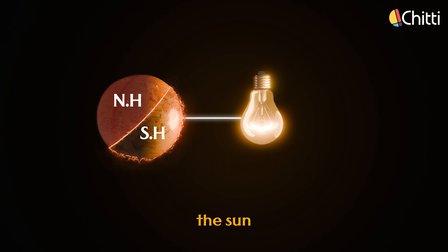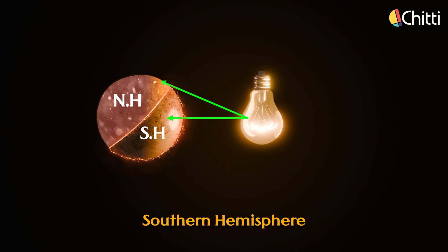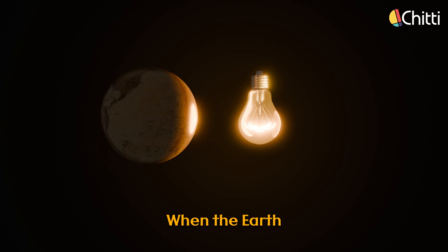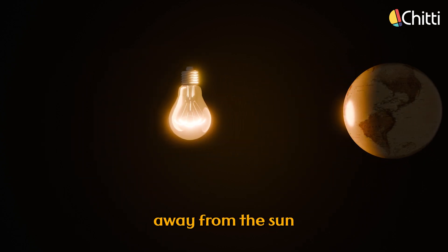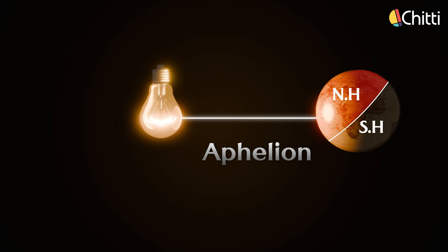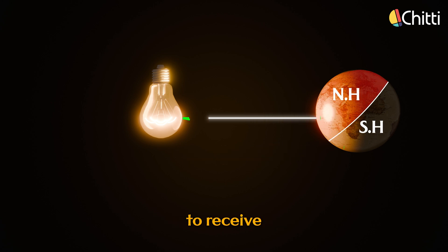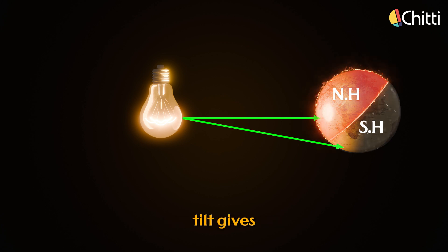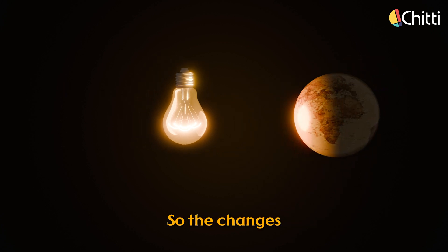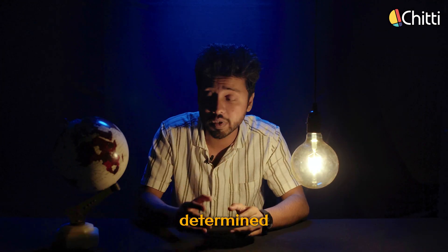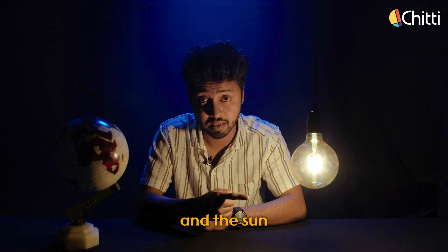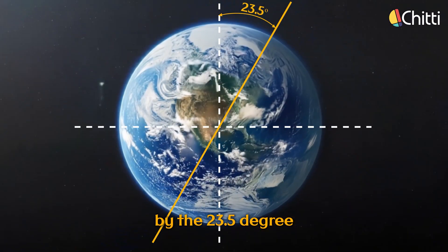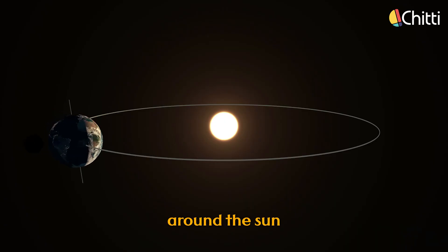Despite being closer to the Sun, the Northern Hemisphere experiences winter because the Southern Hemisphere receives more direct sunlight. When the Earth moves farther away from the Sun to a position known as the Aphelion, the Northern Hemisphere begins to receive more direct sunlight as it is inclined towards the Sun. So the changes in seasons are not determined by the distance between the Earth and the Sun, but rather by the 23.5 degree axial tilt and its revolution around the Sun.